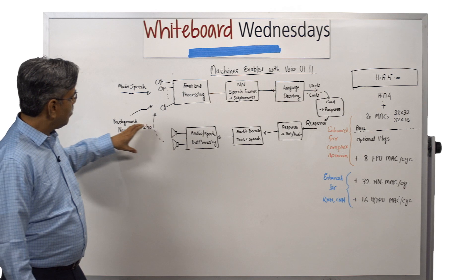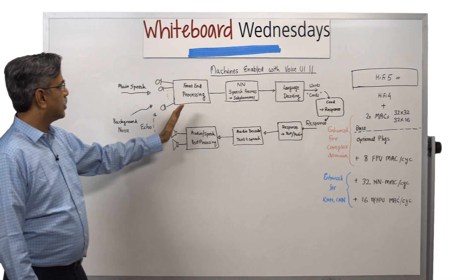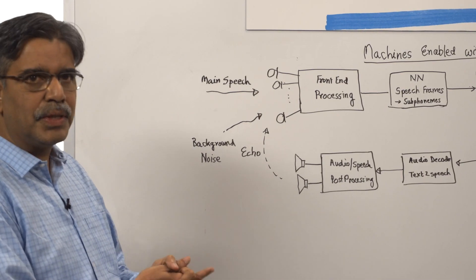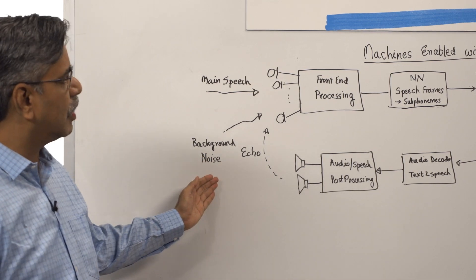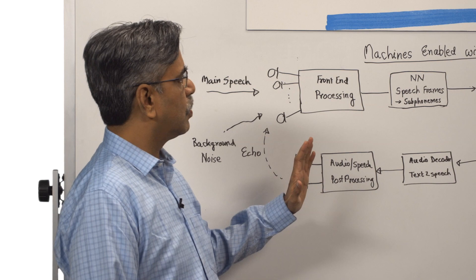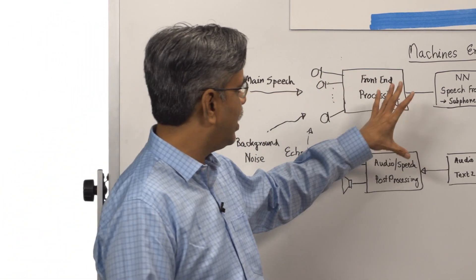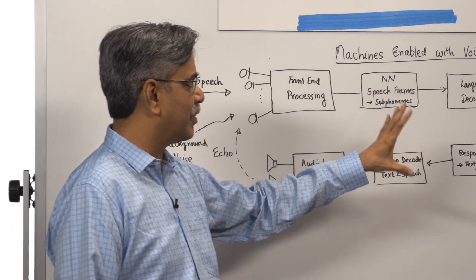When you are playing back and trying to speak again, there will be an echo formed. So the front-end processing has to be very smart and very complicated to really remove the echo, reverb, noise, and background noise. HiFi 4 is the best advanced processor right now in the market to really tackle the front-end processing, post-processing, and audio decoding.